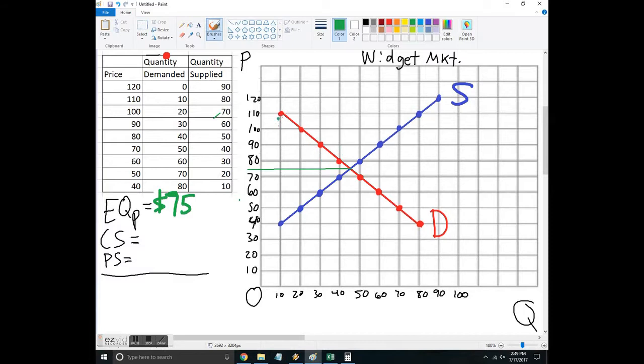Consumer surplus is the area below the demand curve but above the price. These points on the demand curve represent what a consumer is willing to pay. The term for that is reservation price, the highest they're willing to pay. So the way to do that is we just find the area of this triangle. The formula for that is one half base times height.